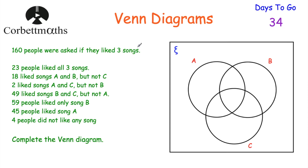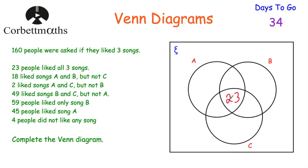Today we're going to look at some wordy questions involving Venn Diagrams, and then focus on some of the notation you may encounter. So here's our first question: 160 people were asked if they liked three songs — Song A, Song B, and Song C. 23 people liked all three songs, so they go in the middle of the Venn Diagram.